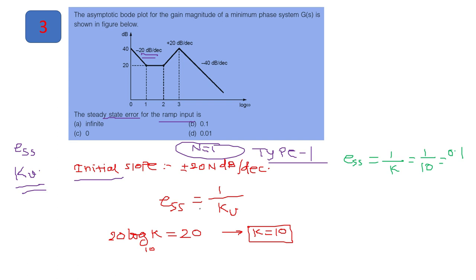Now we have first system type. So steady state error ESS is 1 upon KV. And we can evaluate KV by using the formula 20 log of K, 20 log of K minus 20 N log of Omega. So Omega value from the graph, it is 1 over here. At this point, amplitude is 20. And value of N is 1 because of this type. So this term will become 0. And this is equal to your given amplitude. So 20 log of K is equal to 20. From here, value of K is 10. And that K will become KV. So ESS is 1 upon K, that is 0.1. So option B is correct for this question.